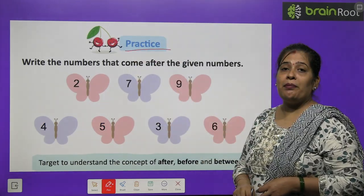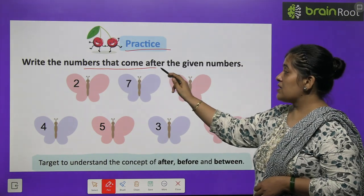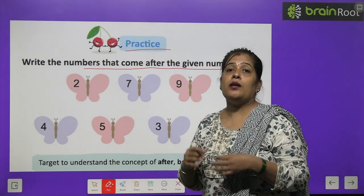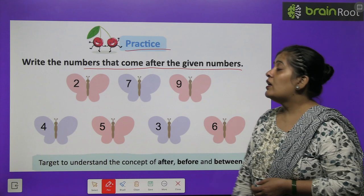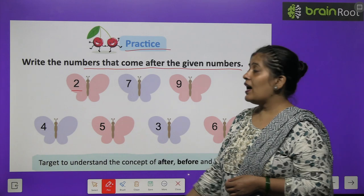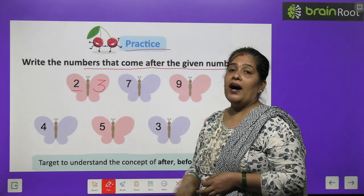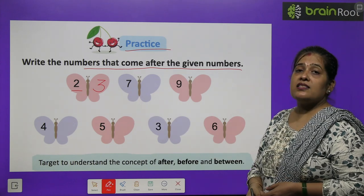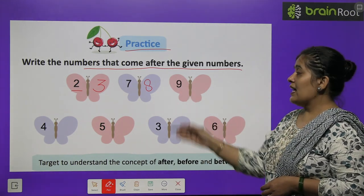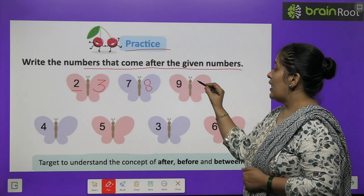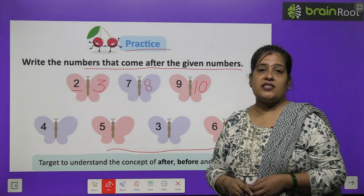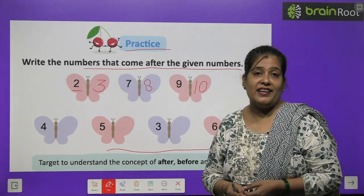Now the time for practice. Write the number that comes after the given number. The first number is number 2 — 2 ke baad kya aata hai? Yes, number 3. The next number is number 7 — 7 ke baad kya aata hai? Number 8. And the next number is number 9 — 9 ke baad aata hai number 10. Rest of the part you have to do by yourself.